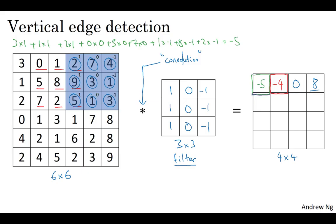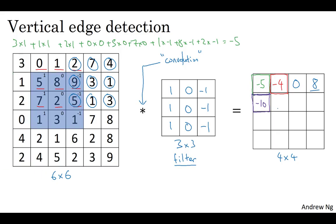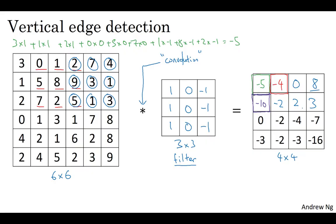Next, to get the element in the next row, you take the blue square and shift it one down to that position, then repeat the element-wise product and addition. If you do that, you should get negative ten. If you shift it one to the right, you get negative two, then two, then three, and so on, to fill in all the rest of the elements of the matrix. And so to be clear, the minus sixteen would be obtained from the lower-right three-by-three region.